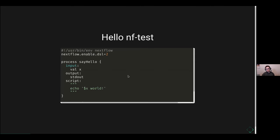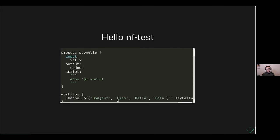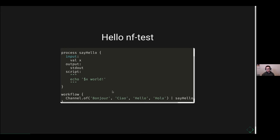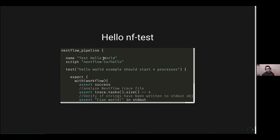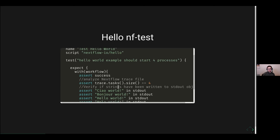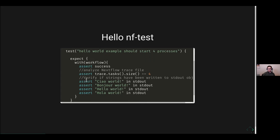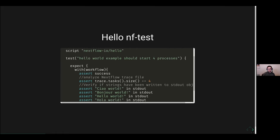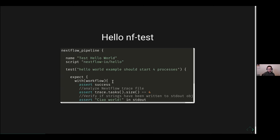So what that kind of looks like — if you haven't memorized the Hello Nextflow script, here's a quick reminder. We start saying all of these different greetings in different languages and pipe them through, and then view it lastly. What that looks like on the NF-Test side is we have a name of the test, the boilerplate up here, a script calling the remote script, and then a name of the test. Then we have what we expect, such as success, how many tasks we're going to have, and what's happening in the standard out of these greetings.